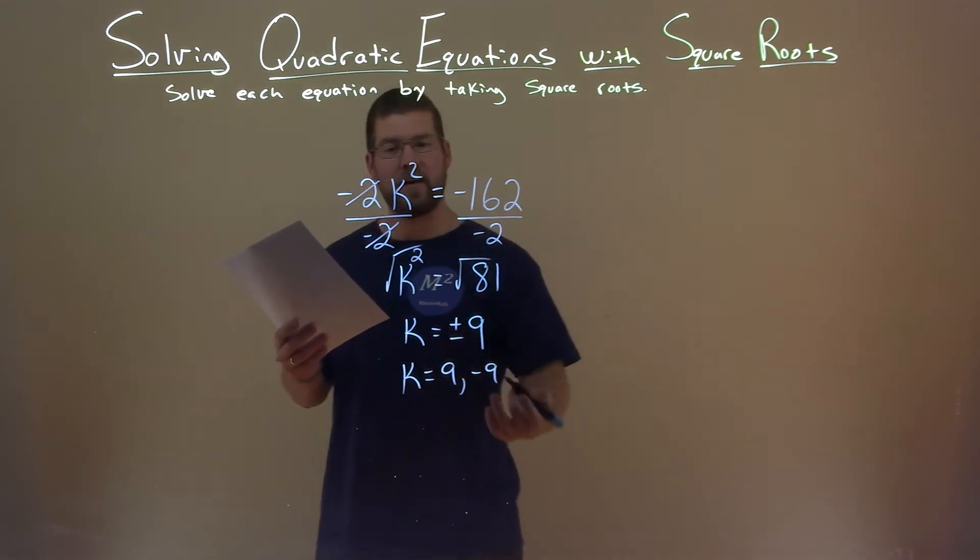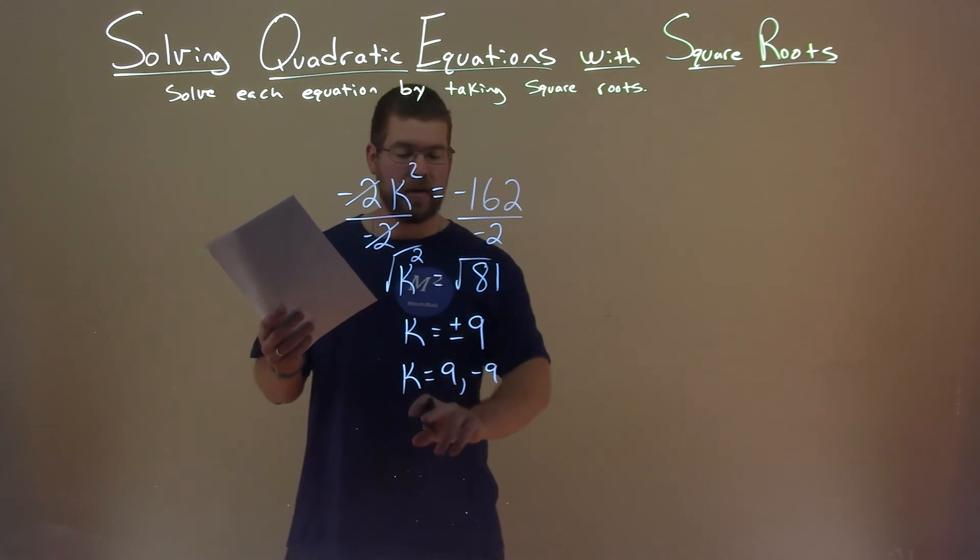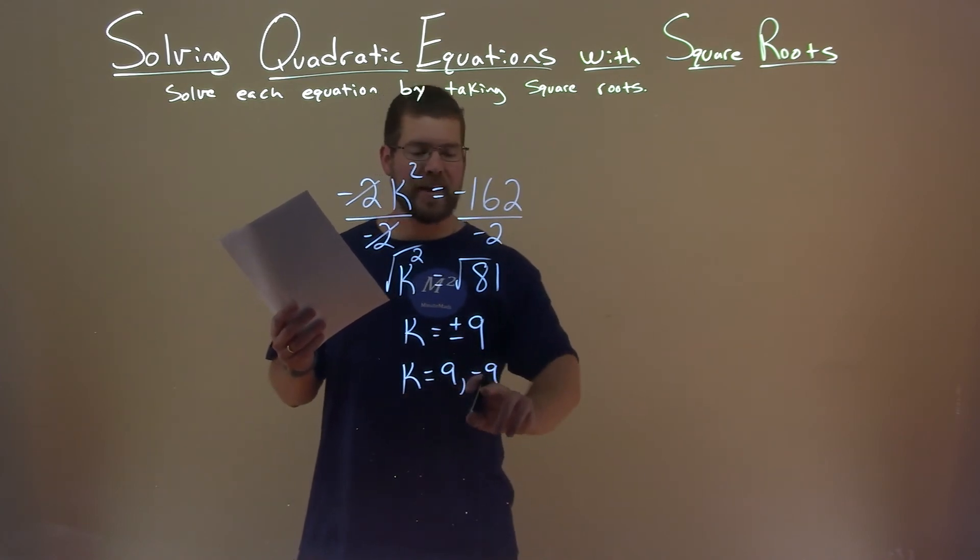Both of those values we can plug in for k, and our equation would be true. So our final answer is k equals positive 9 and negative 9.